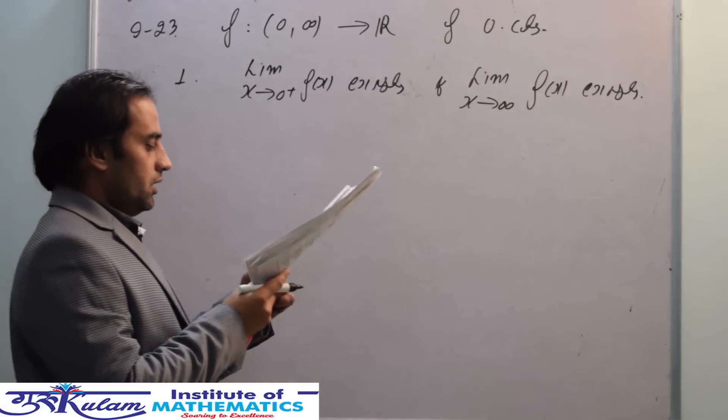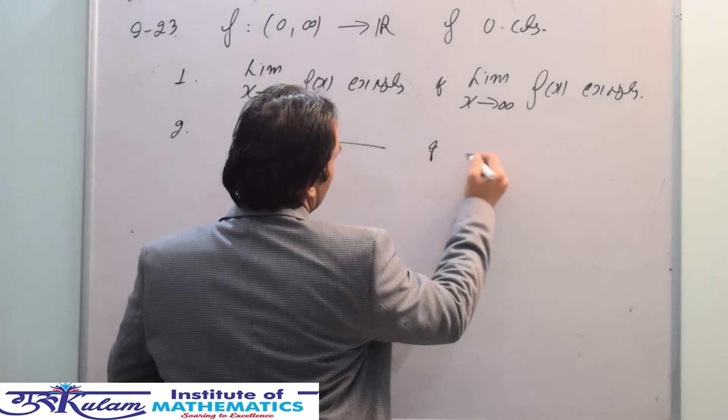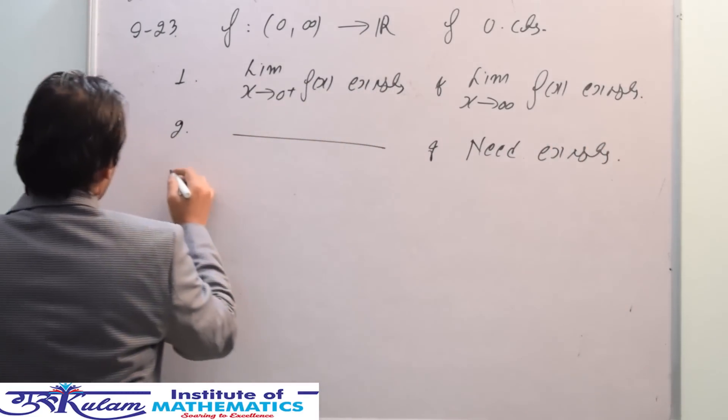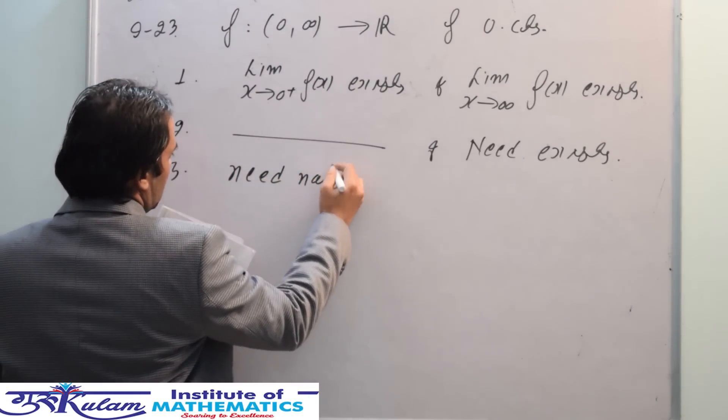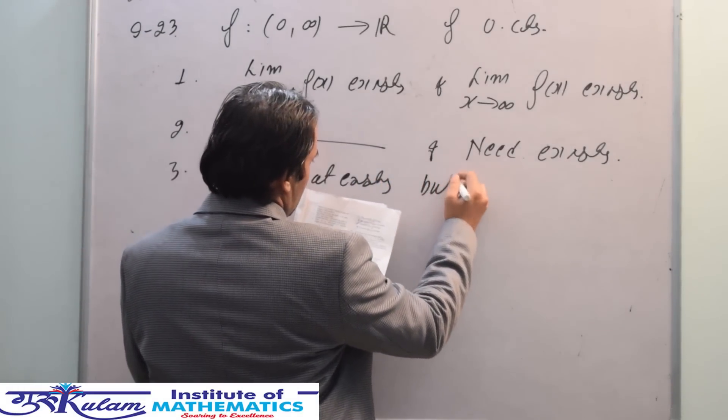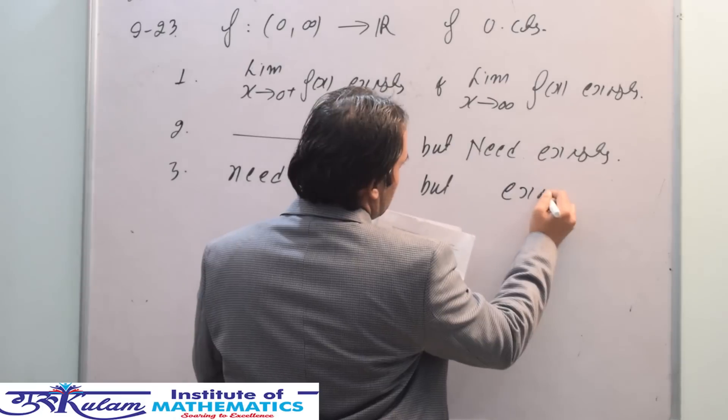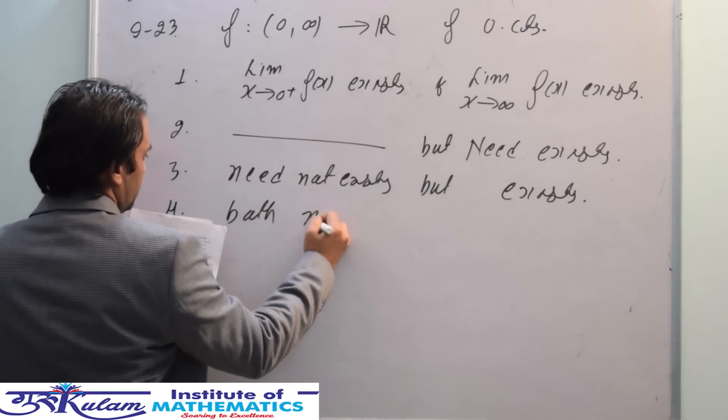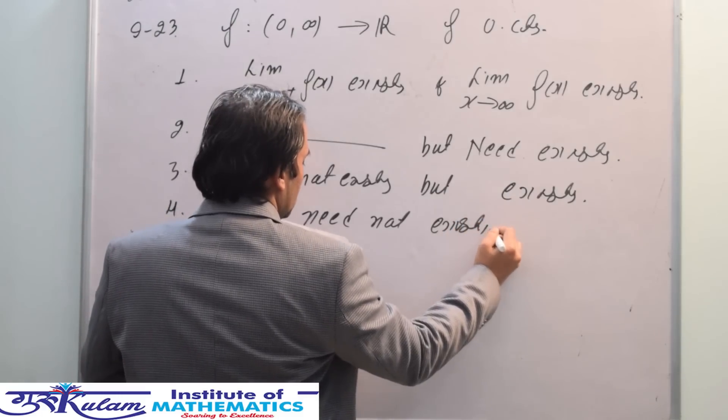Second option is: this limit exists and this need not exist. Third option is: this need not exist but this exists. Fourth option: both need not exist. The third option you can easily prove.